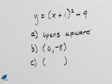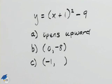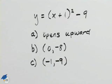Part c asks us to find the vertex of the equation. The vertex is, in this case, since we have x plus 1, the value for the x coordinate is negative 1. And since it's minus 9, the y coordinate of the vertex will be negative 9.